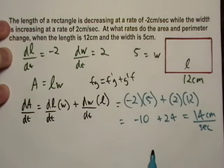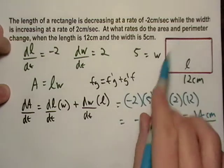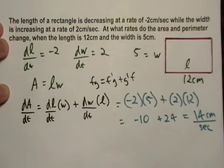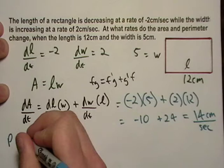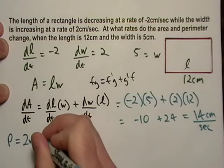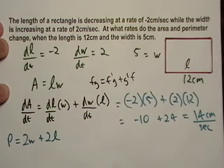The next thing it wants to know is that rate at which the perimeter changes. So perimeter, that's just equal to two w plus two l.